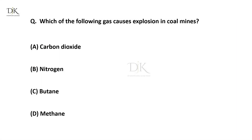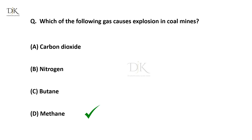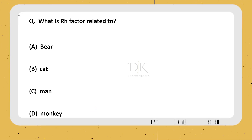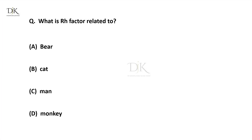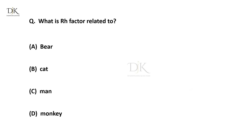Which of the following gases causes explosions in coal mines? The right answer is Methane. What is the Rh factor related to? The right answer is Monkey.